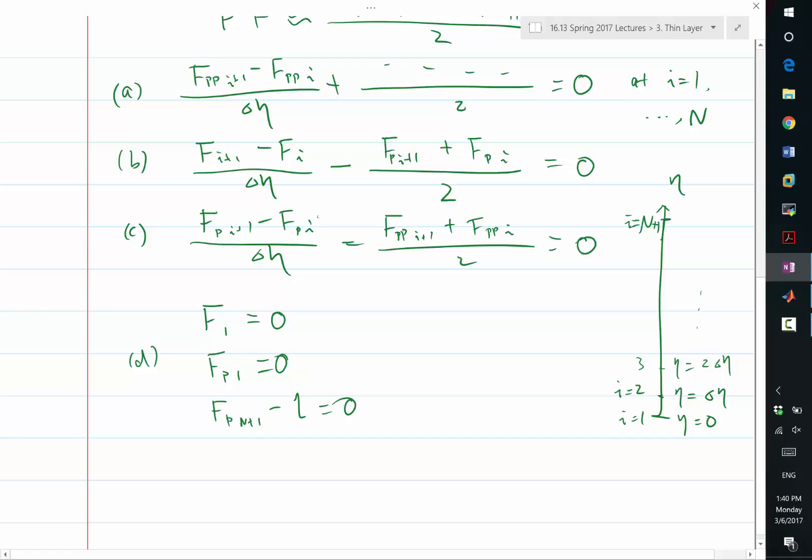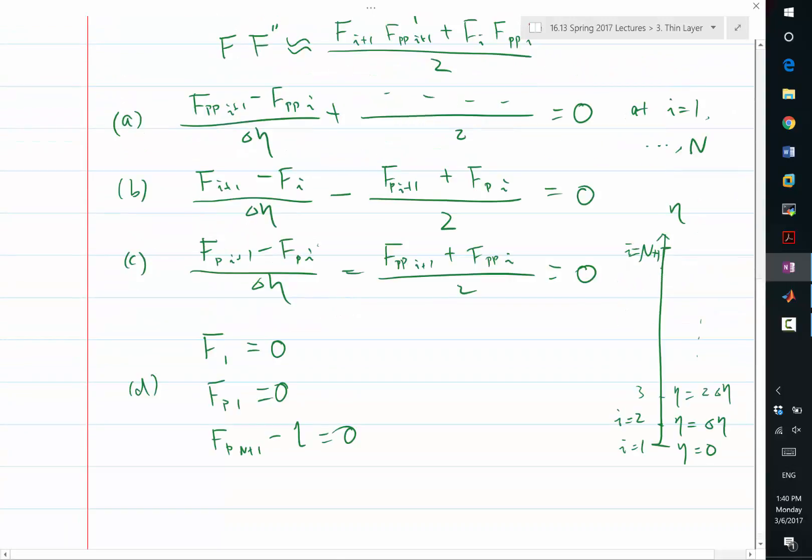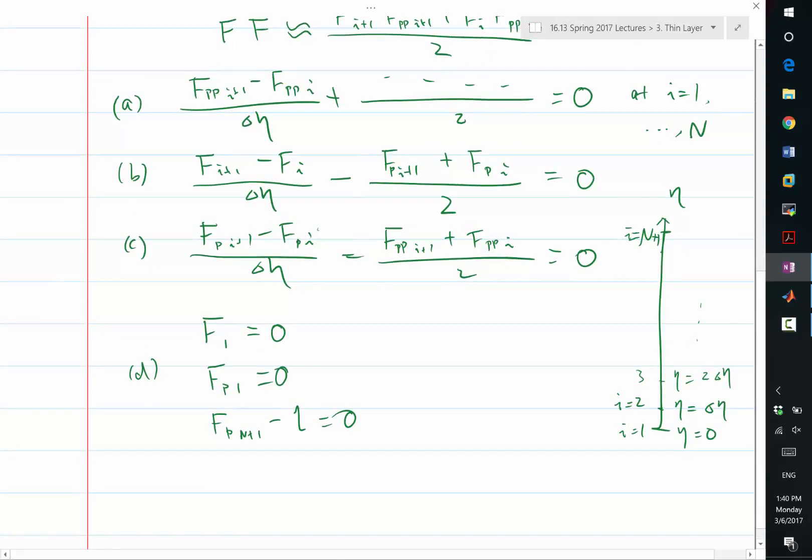Certain functions of these 3n plus 3 variables are equal to 0. If I combine all of these, I can write it as a, b, c, and d into a huge vector.